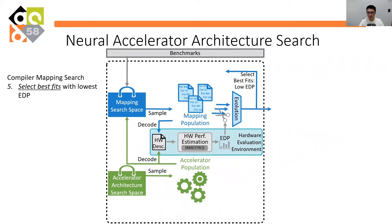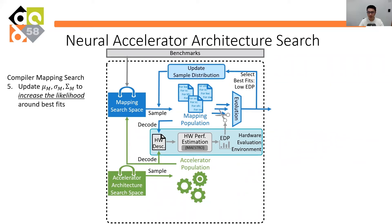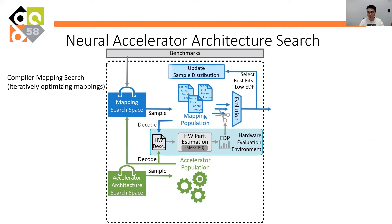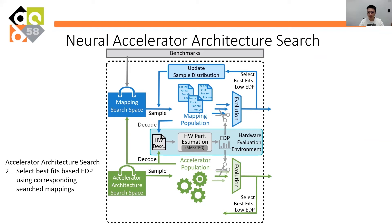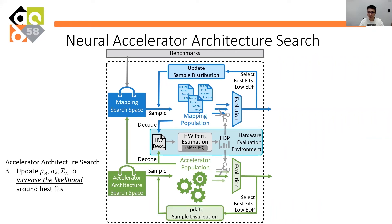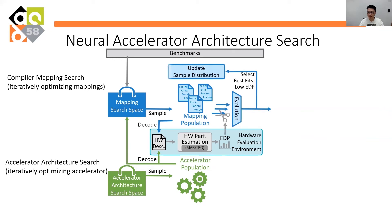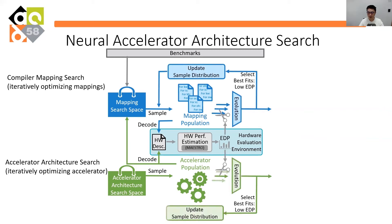We then select the best mapping candidates according to the EDP rewards, and update the mean and variance of the sample normal distribution to increase the likelihood near the best candidates. We repeat the sample, evaluation, selection, and update distribution process. When reaching the predefined number of iterations, the final best mapping for the given Accelerator Candidates will survive. The energy delay product reward is then used to select the best Accelerator candidates in the Accelerator population. We similarly update the Accelerator sample distribution to increase likelihood around the best Accelerator candidates, then repeat the process. Finally, we get the best Accelerator design and its corresponding mapping strategy.